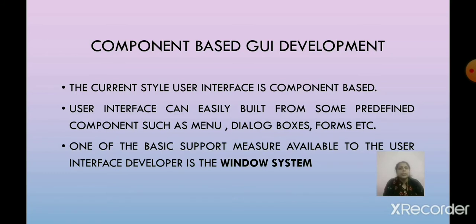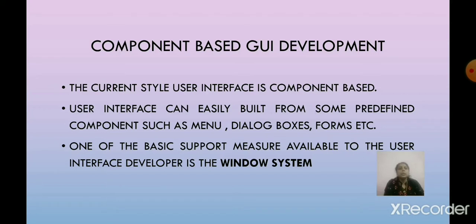Now we will discuss component-based GUI development. The current style of user interface is component-based. A user interface can easily be built from predefined components such as menus, dialog boxes, forms, buttons, etc. One of the basic support measures available to the UI developer is the window system, and component-based GUI development is mainly based on the window system.